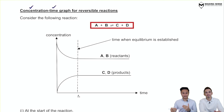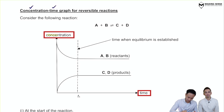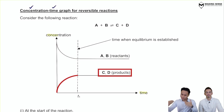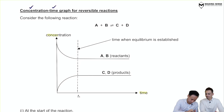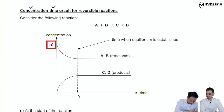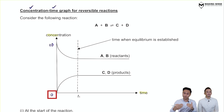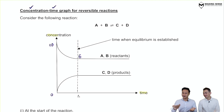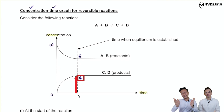We have a reversible reaction: A plus B becomes C plus D. In a concentration-time graph, as the reaction proceeds, you will have less and less reactants and more and more products. For example, starting with 10 mol per dm³ of reactants and zero products, the concentration of reactants slowly drops to six while products rise to four.